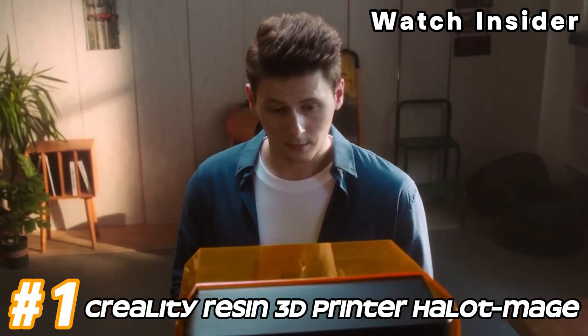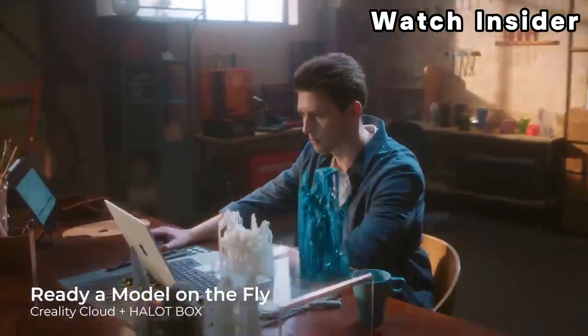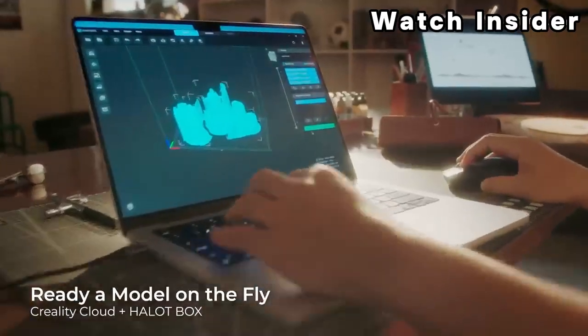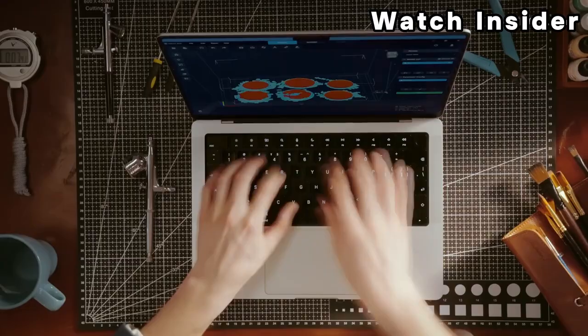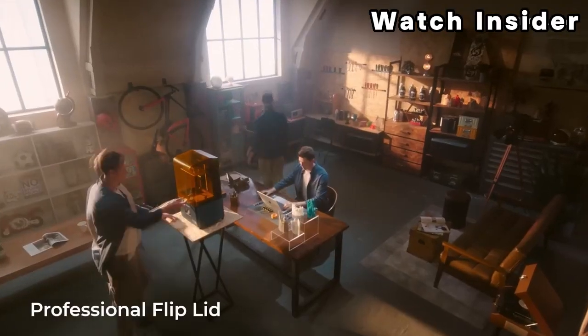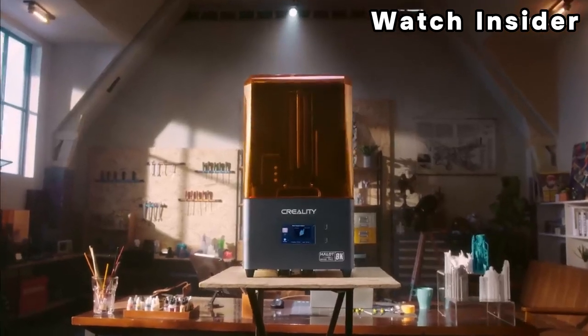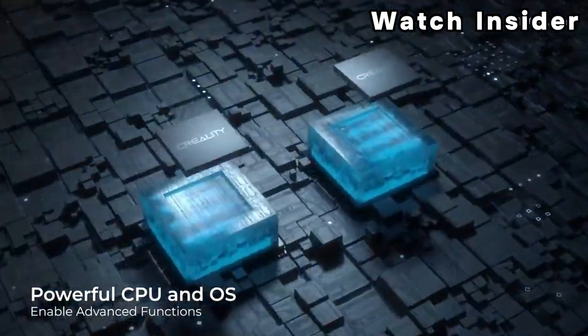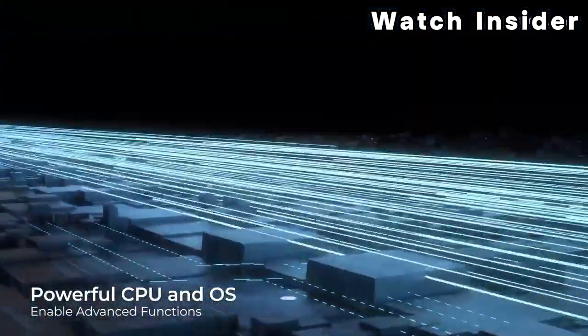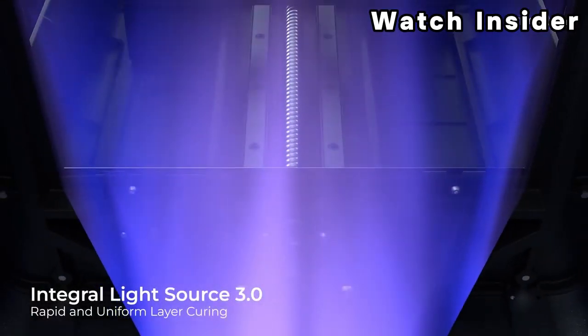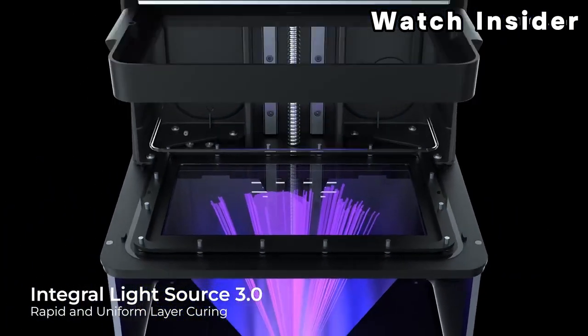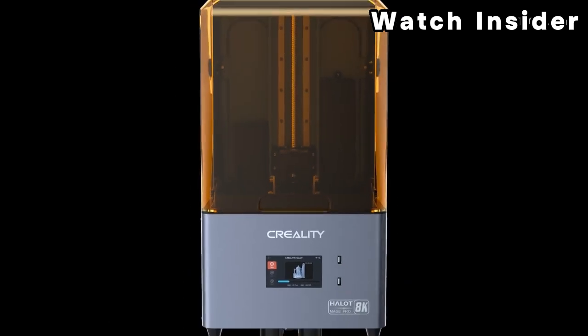Number one: Creality Resin 3D Printer Halot Mage. Creality resin printers typically offer high-resolution printing, allowing for the production of detailed and intricate models with smooth surfaces and fine details. The printer is likely to feature an LCD screen for user interaction and menu navigation. This screen may display print progress, settings adjustments, and other relevant information.